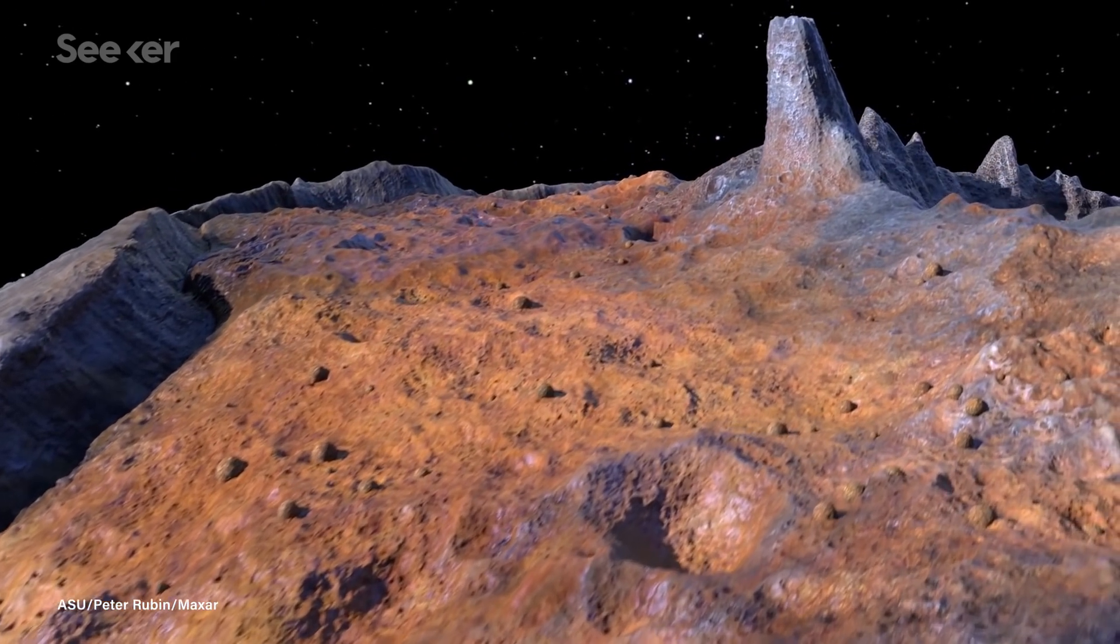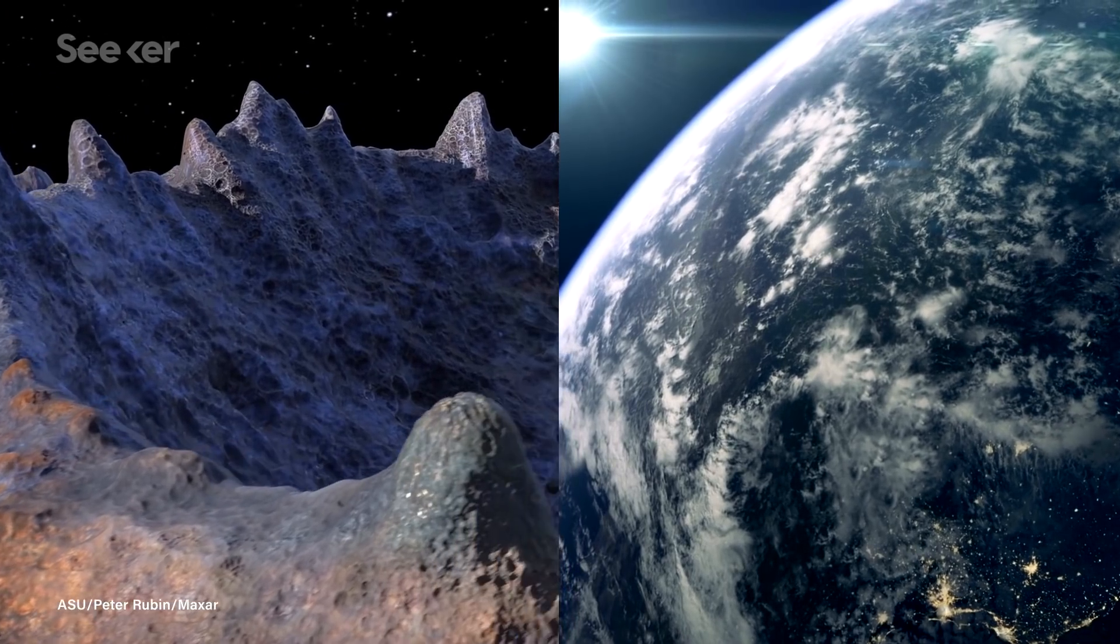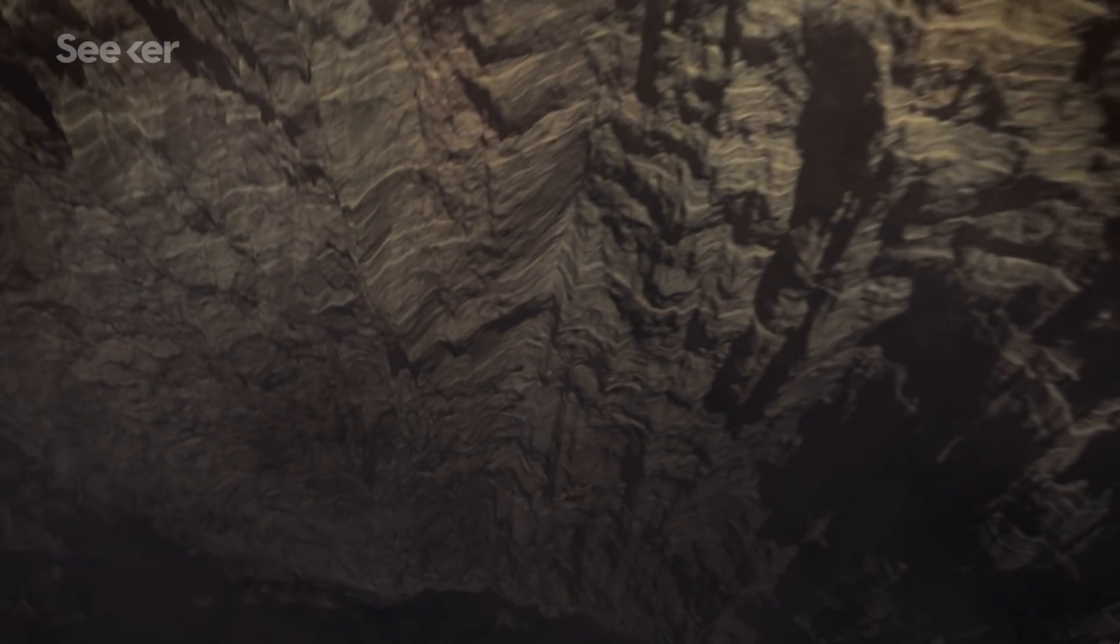Psyche's iron-nickel properties is what makes it stand out, specifically because those elements are often found within the cores of terrestrial or rocky planets like Earth. But Earth's core lies at more than an unreachable 3,000 kilometers below the surface. Whereas Psyche is just out in the open, ready to be studied.